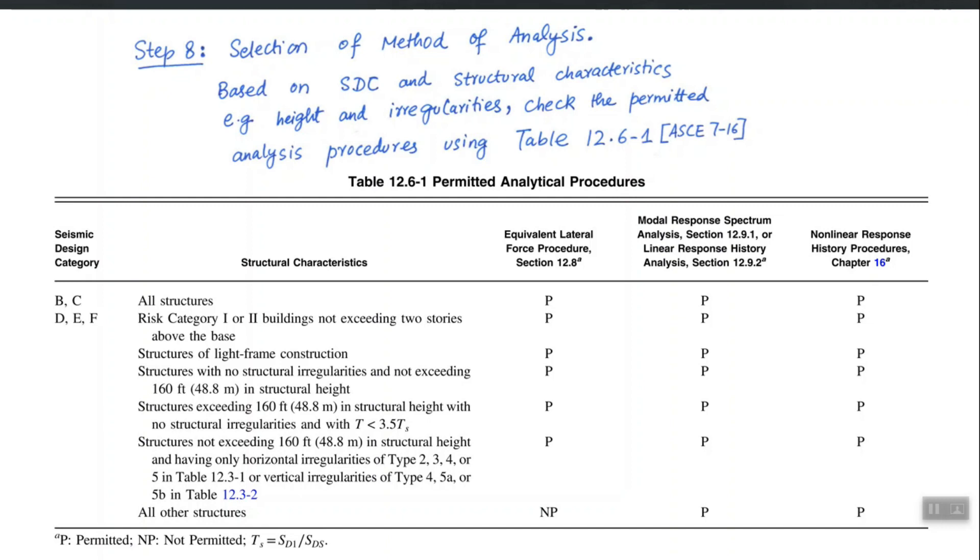The definition of risk category 1, 2, 3 and 4 if you see, for example, 4 is defined as the essential facilities and there is a whole description of what essential facility is. One is described as a building or a structure whose failure may not pose any potential threat to human life. For example, a warehouse, a structure where nobody lives. That can be assigned risk category 1.